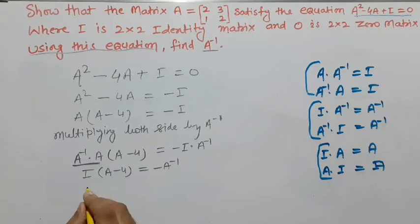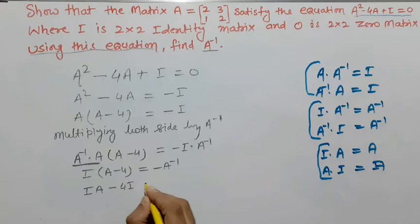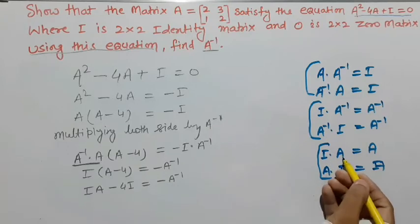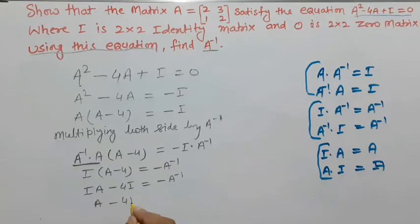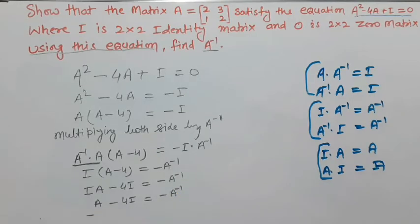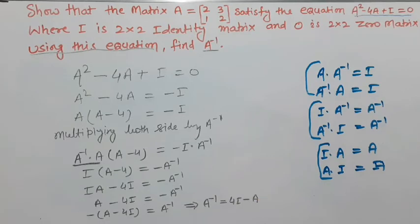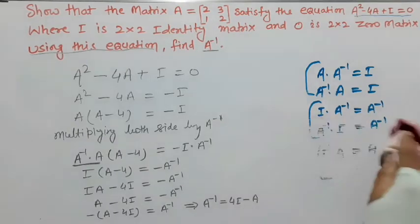Bracket open करो: I×A - 4I = -A⁻¹। I×A = A होता है, तो A - 4I = -A⁻¹। Minus को shift करने पर: A⁻¹ = -(A - 4I) = 4I - A।